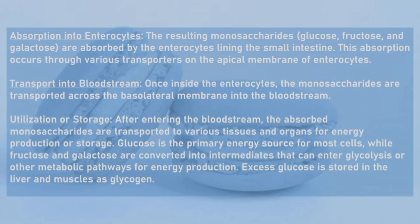11. Utilization or storage: After entering the bloodstream, the absorbed monosaccharides are transported to various tissues and organs for energy production. Glucose is the primary energy source for most cells, while fructose and galactose are converted into intermediates that can enter glycolysis or other metabolic pathways for energy production.